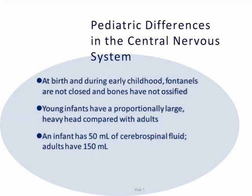Regarding pediatric differences in the central nervous system: at birth and during early childhood, the fontanelles are not closed and the bones have not ossified, to allow the brain to expand. Young infants have a proportionately large or heavy head compared with adults. Additionally, infants have about 50 milliliters of cerebrospinal fluid, whereas adults have about 150 milliliters. This concludes this anatomy and physiology discussion of the neurological system.